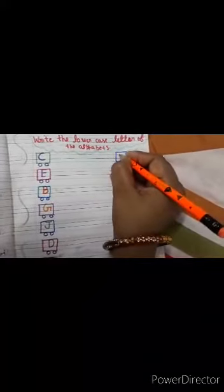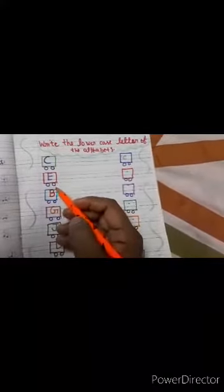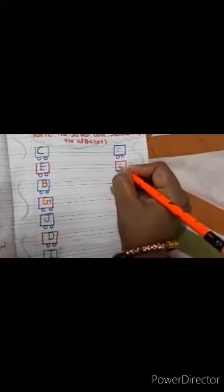Let's start, capital C. Right, so you have to write small C. E, capital E, small E.